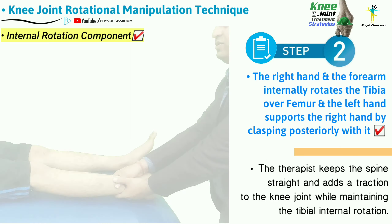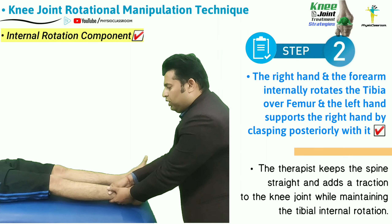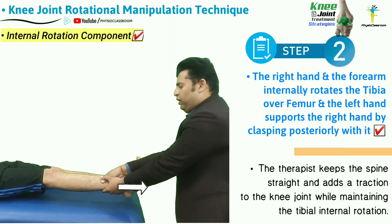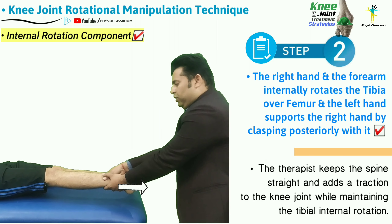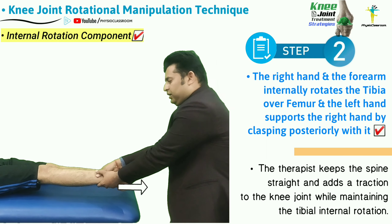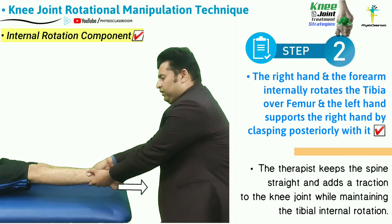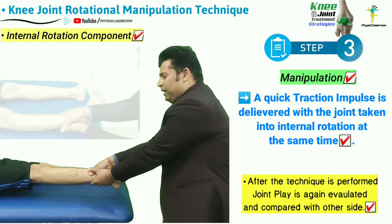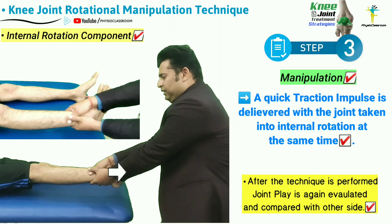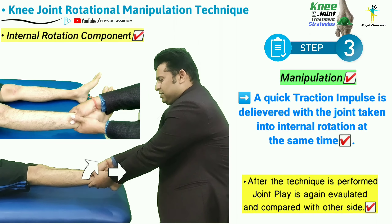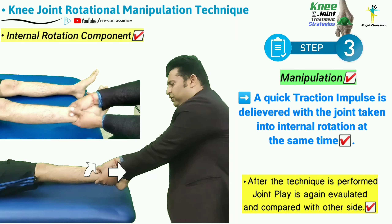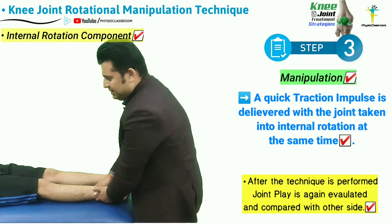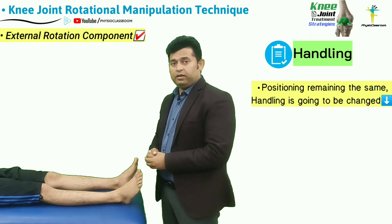With the tibia internally rotated, the therapist keeps the spine straight, leans back, and tractions the knee joint while maintaining internal tibial rotation. Without losing this tension, a quick impulse is delivered — the therapist internally rotates and tractions the knee joint simultaneously.